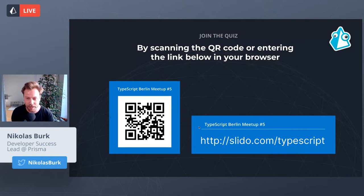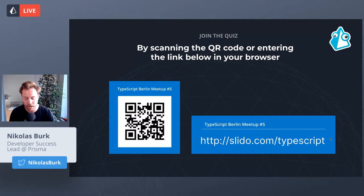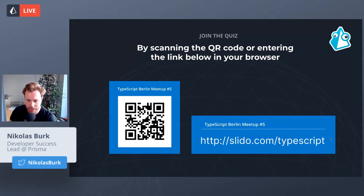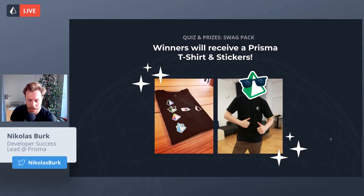You can participate in the quiz by going to slido.com/TypeScript — either type that into your browser, ideally on your phone, or scan the QR code on the bottom right of the screen. That will bring you to the URL where you can answer the questions we ask throughout the meetup. I'll give you a couple more seconds to scan or type the URL, then let's start.